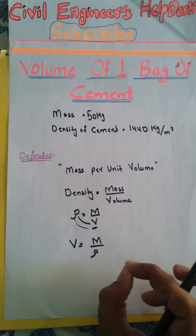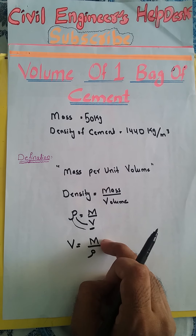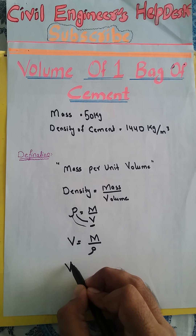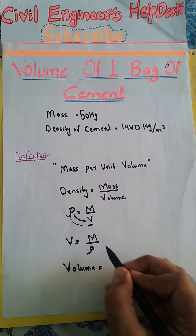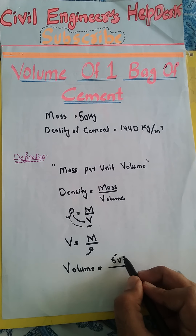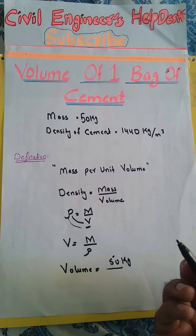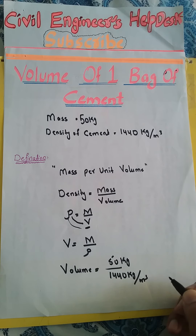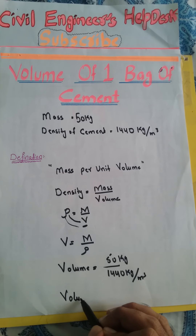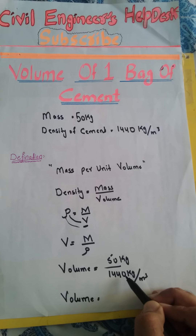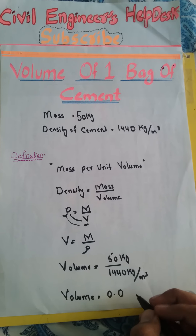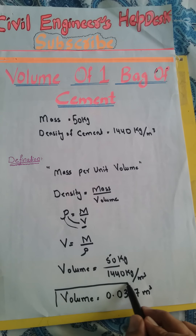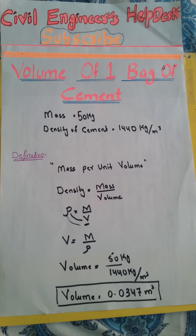To calculate the volume we must know the mass of one cement bag and the density of cement, and we know both these things. Putting values into the formula: mass of one cement bag is 50 kg and density of cement (ρ) is 1440 kg per cubic meter. After calculating, 50 divided by 1440 equals 0.0347 cubic meters.